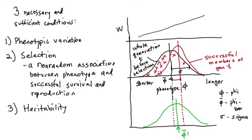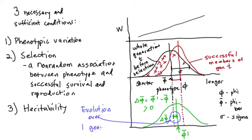We call the average phi-bar prime — the average phenotype for generation T+1 — and it's somewhat higher than where the previous generation was before natural selection, but not as extreme as the selected parents. The fact that the mean phenotype of the population has shifted at all from generation T to generation T+1 — this difference, delta phi-bar — is a positive number here, and this slight increase in average arm length across a single generation is the evolutionary change resulting from natural selection. By satisfying all three conditions, some change is the necessary outcome.